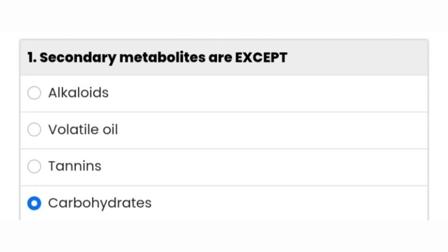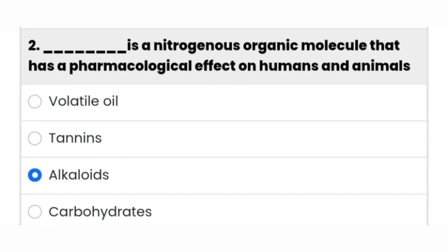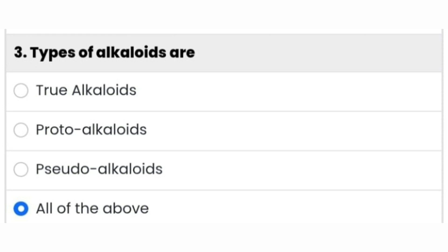Next question: dash is a nitrogenous organic molecule that has a pharmacological effect on humans and animals. The third option, alkaloids, is the right answer. Next question: types of alkaloids are true alkaloids, protoalkaloids, and pseudoalkaloids. The fourth option, all of the above, is the correct answer.